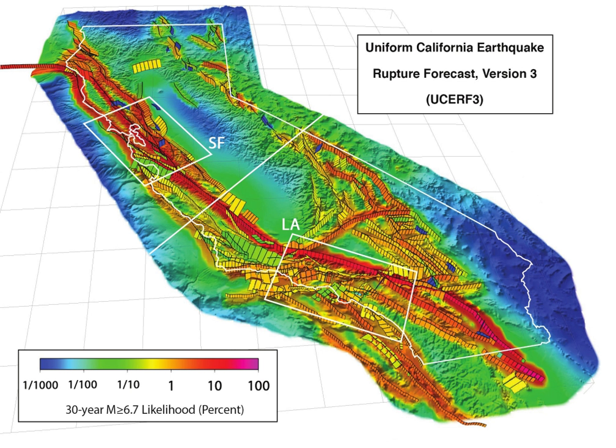The 2015 Uniform California Earthquake Rupture Forecast, version 3, or UCERF3, is the latest official earthquake rupture forecast for the state of California, superseding UCERF2. It provides authoritative estimates of the likelihood and severity of potentially damaging earthquake ruptures in the long and near term.